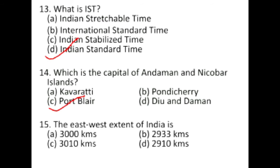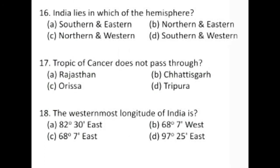Port Blair is very famous for its Cellular Jail, where many people were given the punishment of Kala Pani. The east-west extent of India is 2,933 km. India lies in the northern and eastern hemispheres, because the Greenwich meridian is 0 degrees longitude, and everything to its east is in the eastern hemisphere, while India is also entirely north.